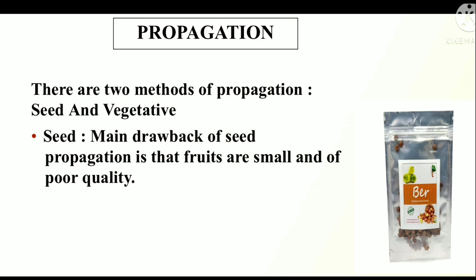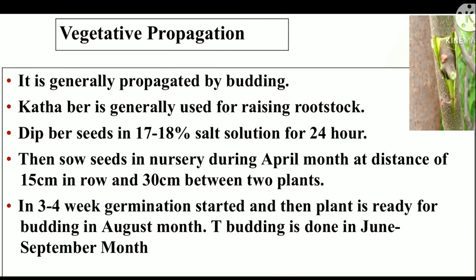Let's start propagation. There are two methods of propagation: seed and vegetative. Main drawback of seed propagation is that fruits are of small size and of poor quality. Vegetative propagation — it is generally propagated by budding. Cathali Ber is generally used for raising rootstock. Dip Ber seeds in 17-80% salt solution for 24 hours, then sow seeds in the nursery during April month at a distance of 15 cm in row and 30 cm between two plants. In three to four weeks germination starts and the plant is ready for budding in August month. Budding is done in June to September month.